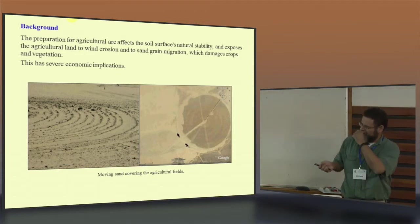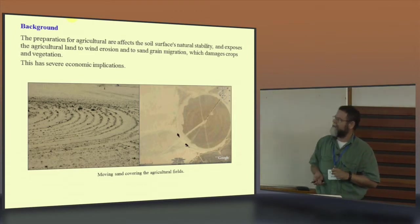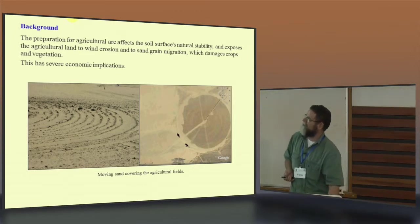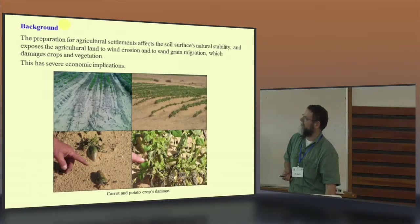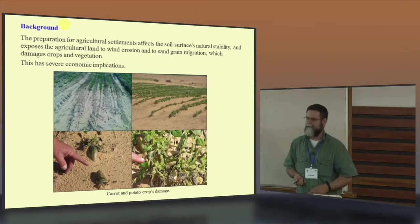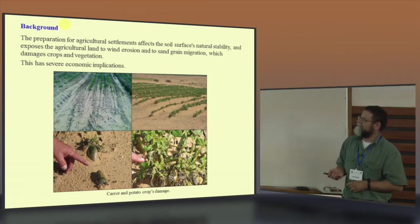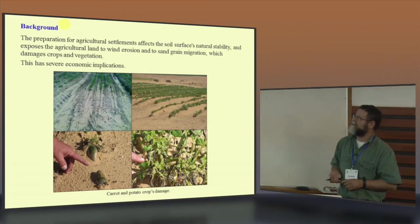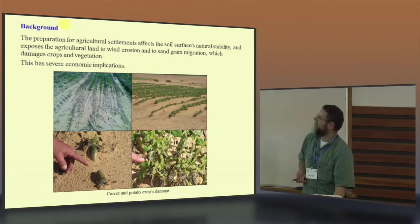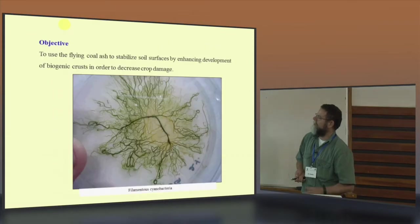This photo from Google, but when you get inside to the field, you will see what's happening. It has severe economic implications. You can see what's happening. This is the carrots and potato fields. The leaves are looking bad. Some of the potatoes just exposed.